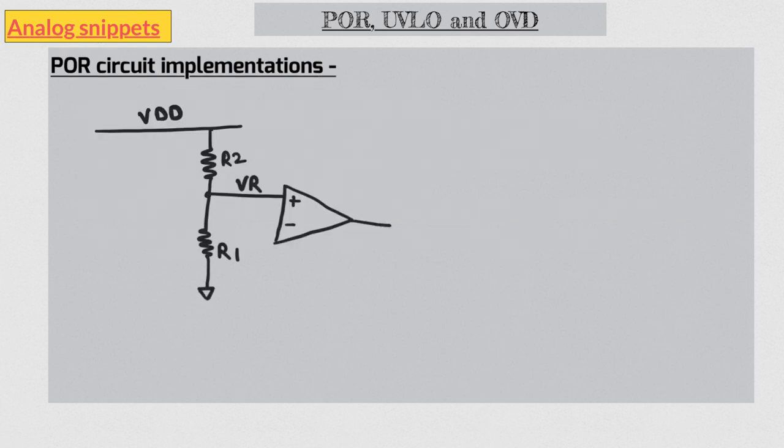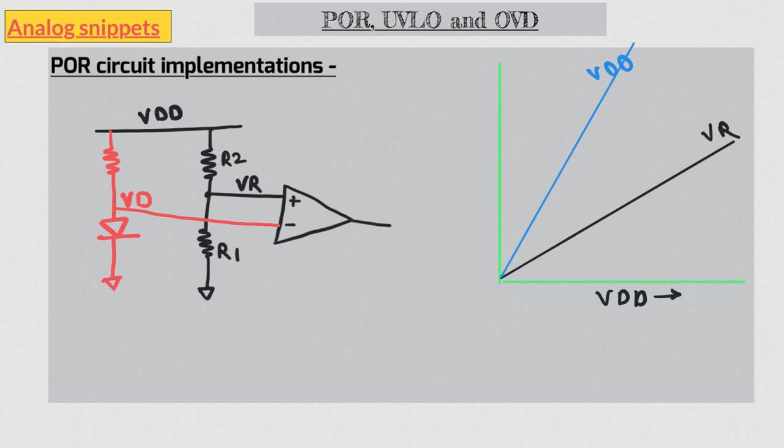So here we have the voltage comparator and our linear input, which is a voltage divider. Now we know diode is a non-linear component, so we can use diode to build our second input. Let's now plot our two input voltages as supply increases from zero volt. In blue we have the input supply, and in black we have the output of the resistor divider. At low supply voltages, diode will be off, so this resistor here will pull the VD to the supply.